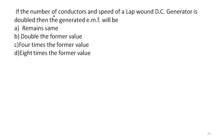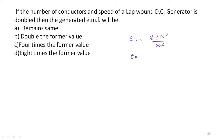If the number of conductors and the speed of a lap wound DC generator are both doubled, then the generated EMF remains the same, doubles, becomes 4 times, or 8 times. The induced EMF formula is: Eb equals φZNP divided by 60A. Here, the number of conductors are doubled and speed is also doubled. For lap winding, Eb is directly proportional to Z and speed N.